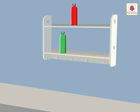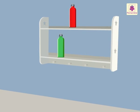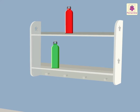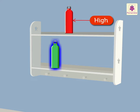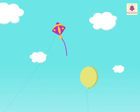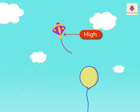Next is high and low. Look at the colourful bottles on the shelf. The red bottle is on the higher shelf, while the green bottle is on the lower shelf. Now, look at the sky. The kite is flying high in the sky, but the balloon is flying at a lower level.